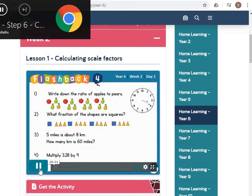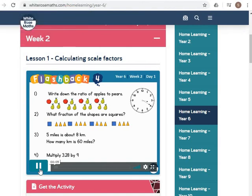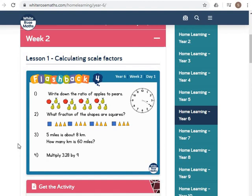Welcome back. Today we're going to start with something called a flashback four. You may have seen this before, but don't worry if you haven't. I'm going to explain how it works. There are four questions. The first is something from last time out. The second is something from maybe a week ago. And the other two are from maybe last month or even earlier in the year. The clock is for you to practice telling the time. So pause the video now and have a go at these four questions to begin with.